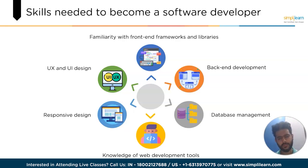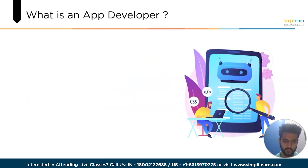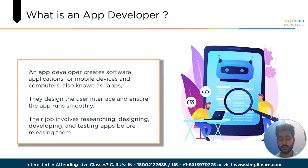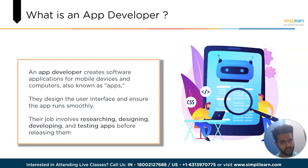These were some of the skills of a web developer. Now let's look at the next topic — what is an app developer? An app developer is a person who creates software applications that can run on mobile devices like smartphones or tablets, or on computers. These applications, also known as apps, are designed to perform specific tasks like helping you stay organized, play games or communicate with others. App developers use programming languages like Java or Swift to write the code that makes an app function, and they also design the user interface and ensure the app runs smoothly and without errors.